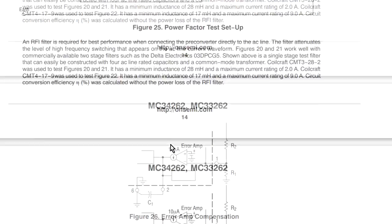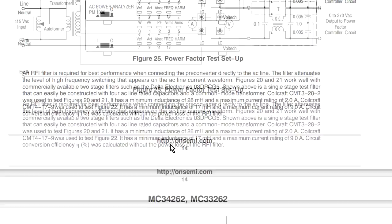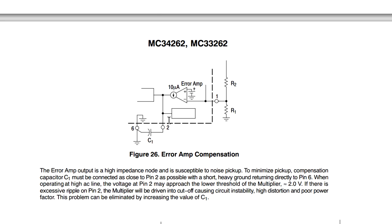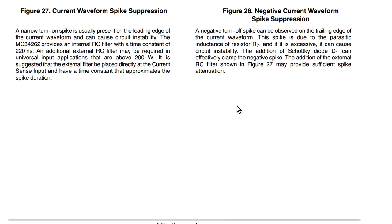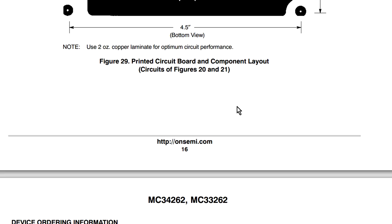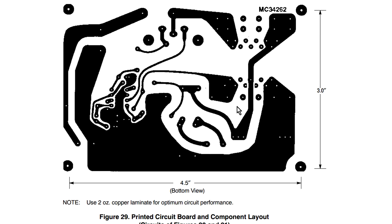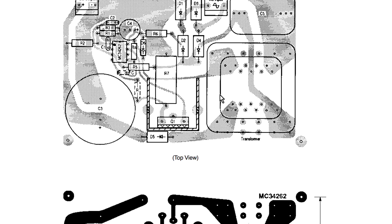We've got some typical waveforms here which is quite nice. If you want to take a look, there's typical test things, error amplifiers, error output compensation, current waveform spike suppression, all sorts of things. I highly recommend you download this. Look at the old school layout, look at the old school taped layout there. I love that, brilliant.